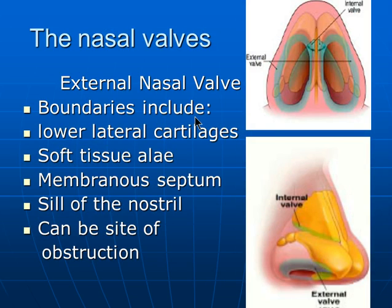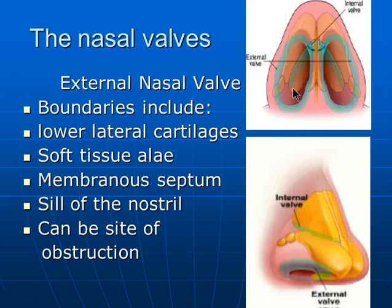The nasal valve refers to constrictions in the nasal cavity — about four constrictions. The most important of these is the internal nasal valve. Then there is the external nasal valve. Further posteriorly there is the middle of the fossa, and finally the choanae, the posterior opening of the nasal cavity.